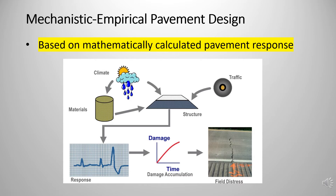The ME method mechanistically calculates pavement response, including stress, strain, and deformation. However, there is still an empirical element to relate the response to the pavement damage. That is why the method is called mechanistic empirical.